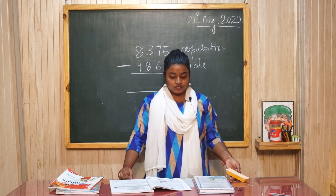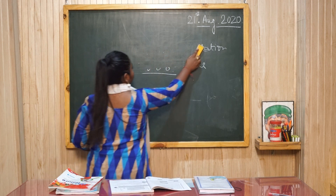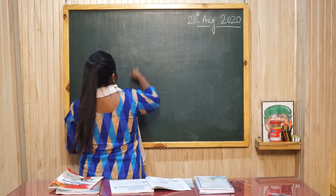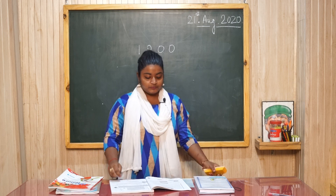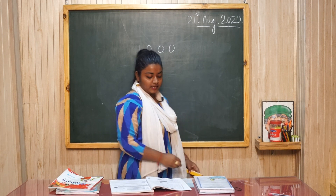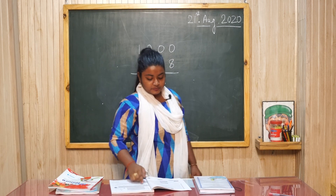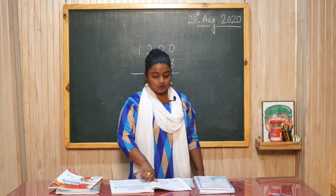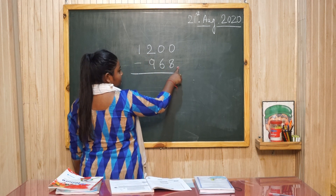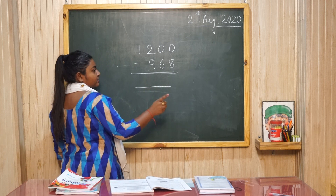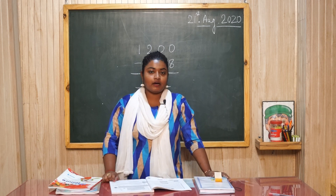Coming to the next, question 8. There are 1,200 seats in a theatre. 1,200 seats हैं थेटर में. On a particular day, 968 persons watch the show. How many seats are vacant? You will deduct 1,200 from 968. Therefore, this much seats are vacant.